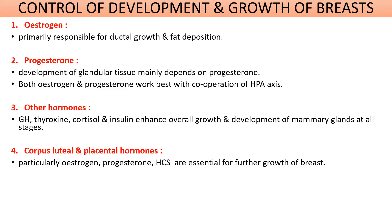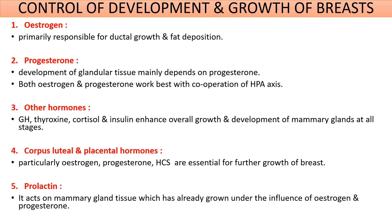During pregnancy, the hormones secreted by the corpus luteum and placenta are responsible for the further growth of the breast. Another very important hormone called prolactin causes development of the breast during pregnancy and lactation.